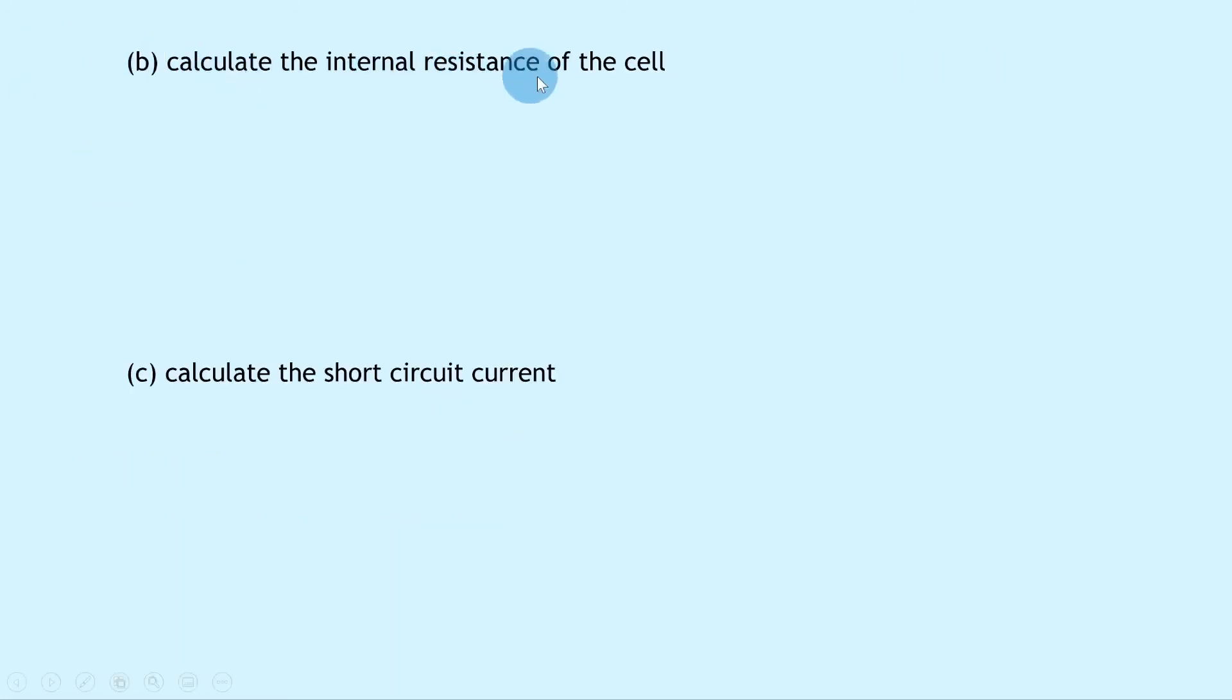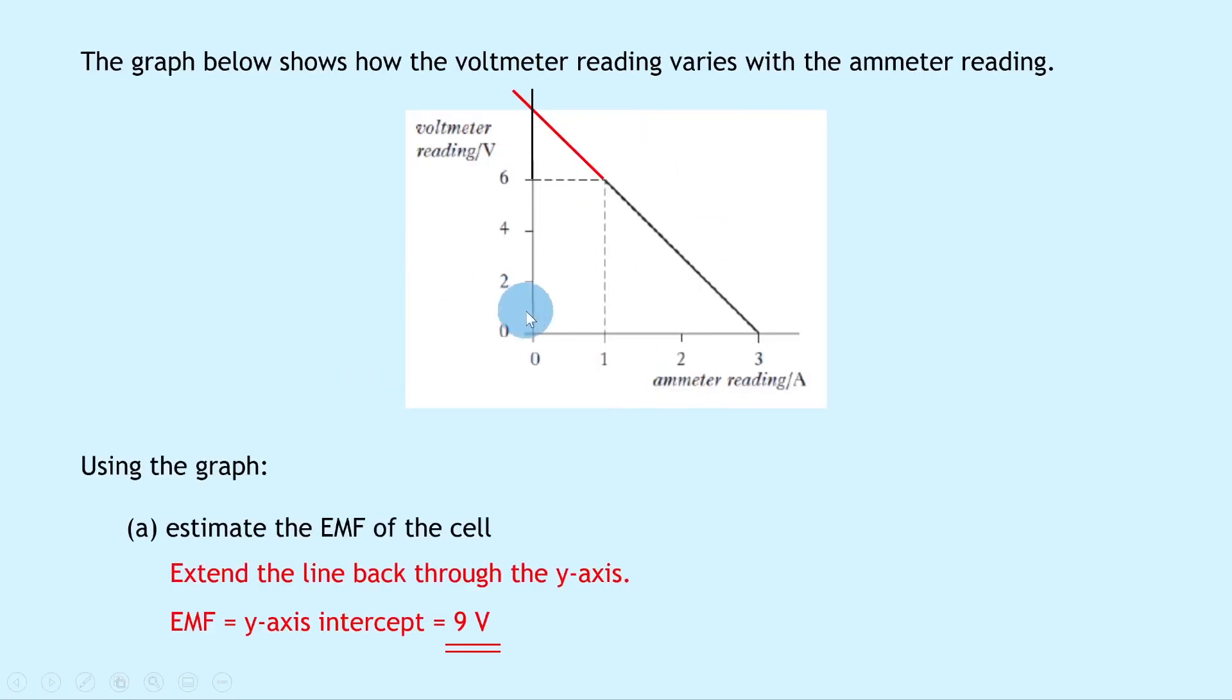Part b then says to calculate the internal resistance of the cell, so remember to find the internal resistance from the graph we need to find the gradient of the line. So going back to the graph here, the two easiest points to choose on the line would probably be one, six and three, zero.